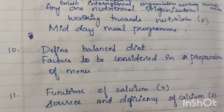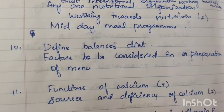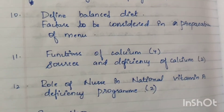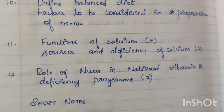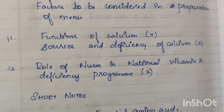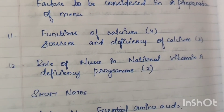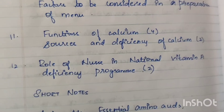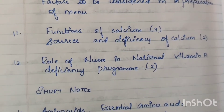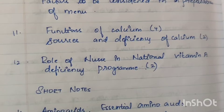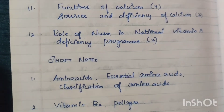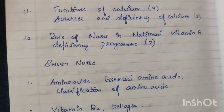Next: Balanced diet — factors to be considered in preparation of a menu — 1 time. Functions of calcium — 4 times; this is a very important question. For 5 marks questions: essential amino acids, classification of amino acids — if you cover amino acids, all these questions are covered. This appears 2 times at 5 marks and at 15 marks.